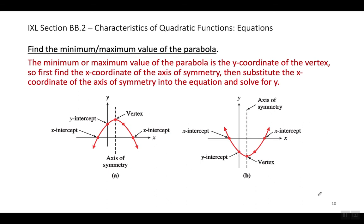Now we're going to find the minimum or maximum value of the parabola. Remember that the minimum or maximum value of the parabola is the Y coordinate of the vertex. Basically, I'm going to do exactly what I just did in the last couple of examples, and the answer will be the Y coordinate of the vertex. If you're lost, you need to make sure you've done BB1 or look at my explanation in BB1.